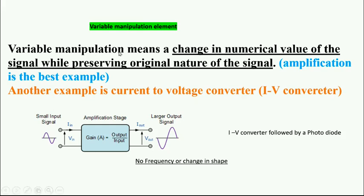Finally, the variable manipulation element. The variable manipulation might change the numerical value of the signal while preserving the original nature of the signal. You understand the difference between the other one and the variable manipulation element - it's a numerical value. Amplification is the best example. Amplification means one volt peak to peak is converted into ten volt peak to peak. This is amplification. One millivolt peak to peak is 100 millivolt peak to peak. The frequency remains the same, the shape remains the same. So the numerical value of the signal changes by preserving the original nature of the signal.